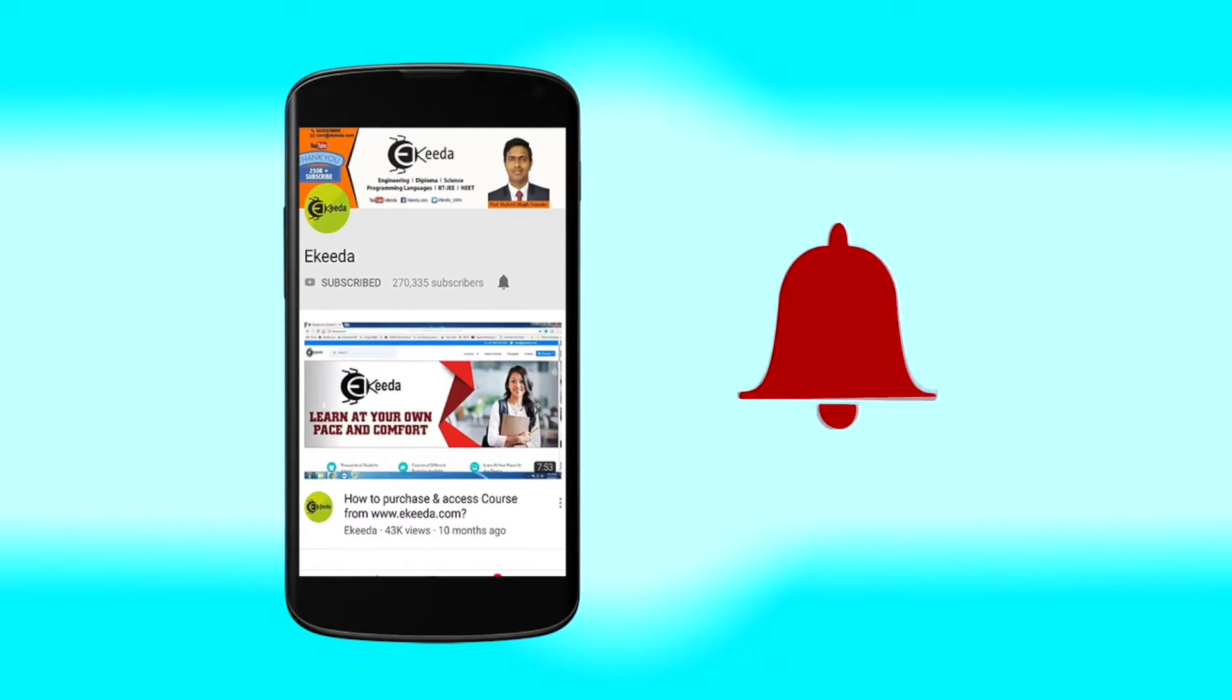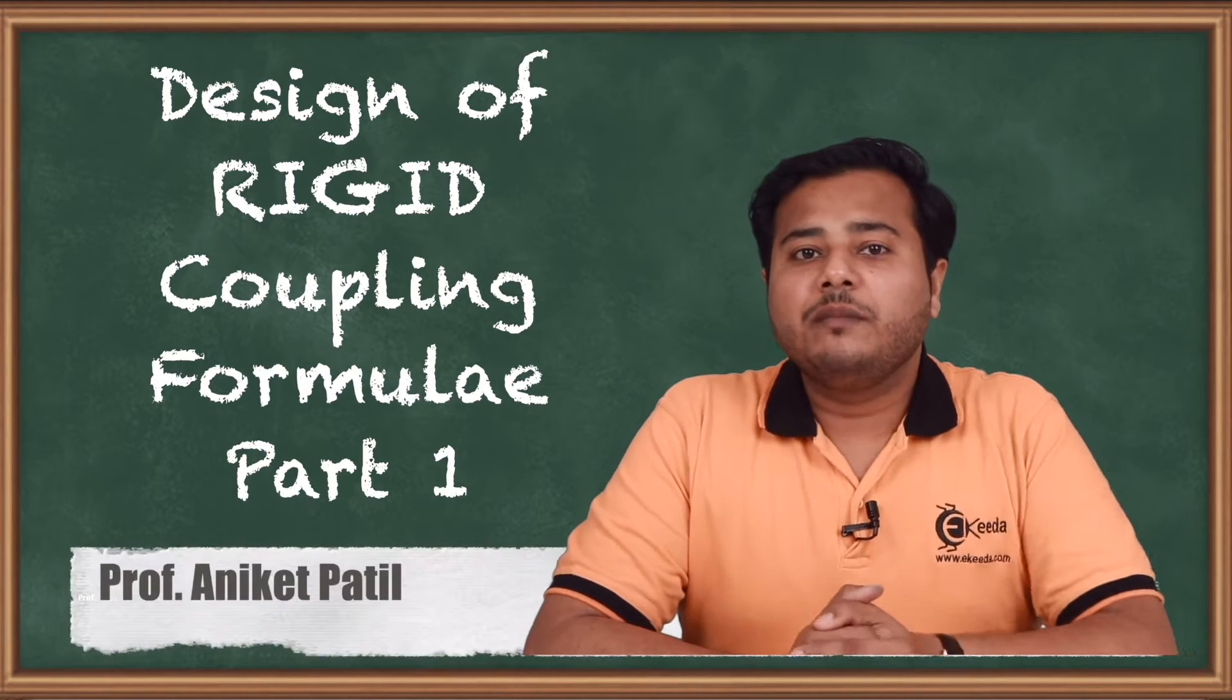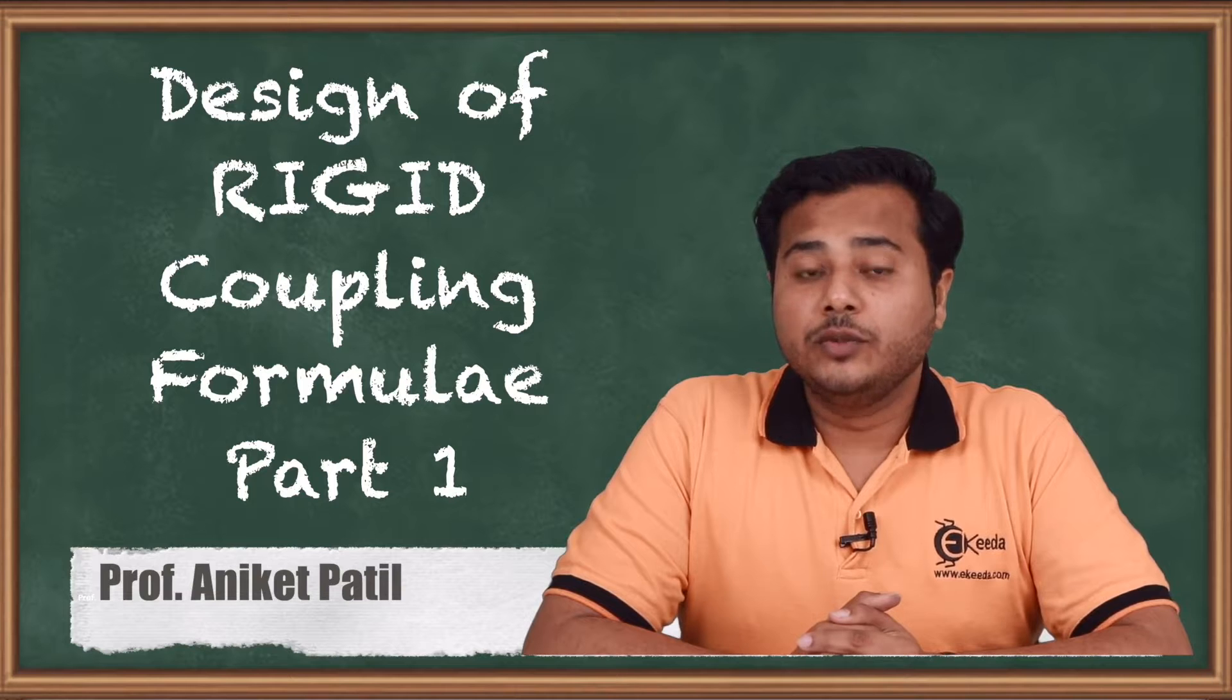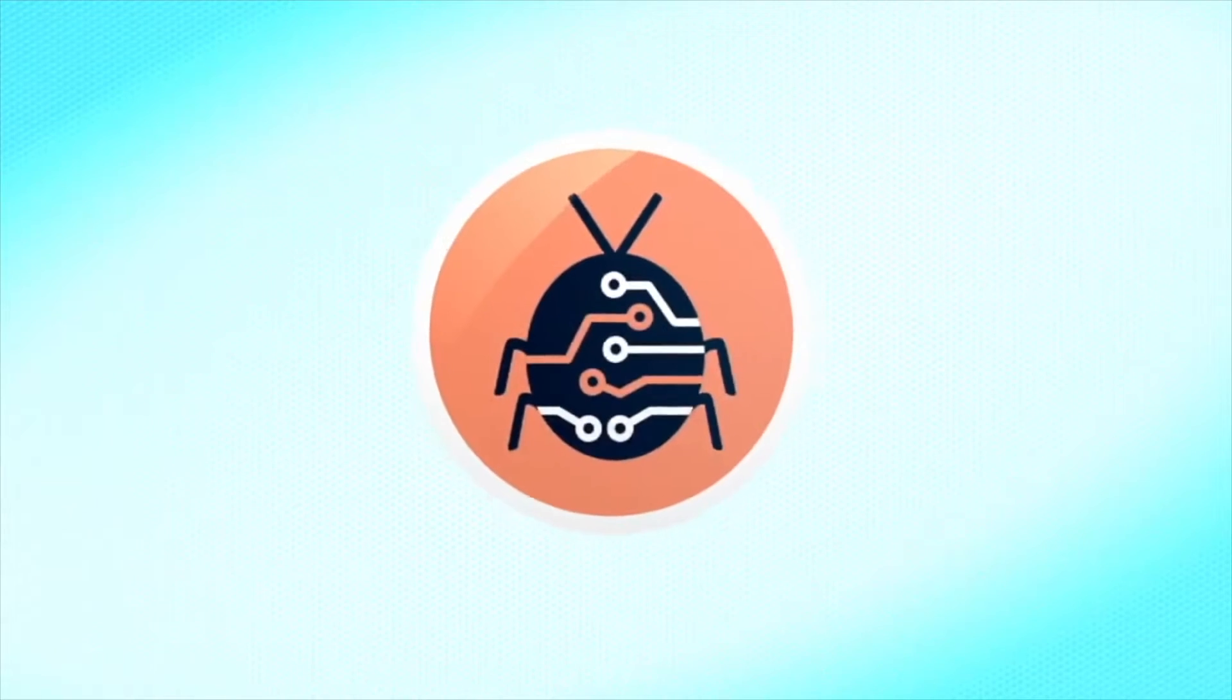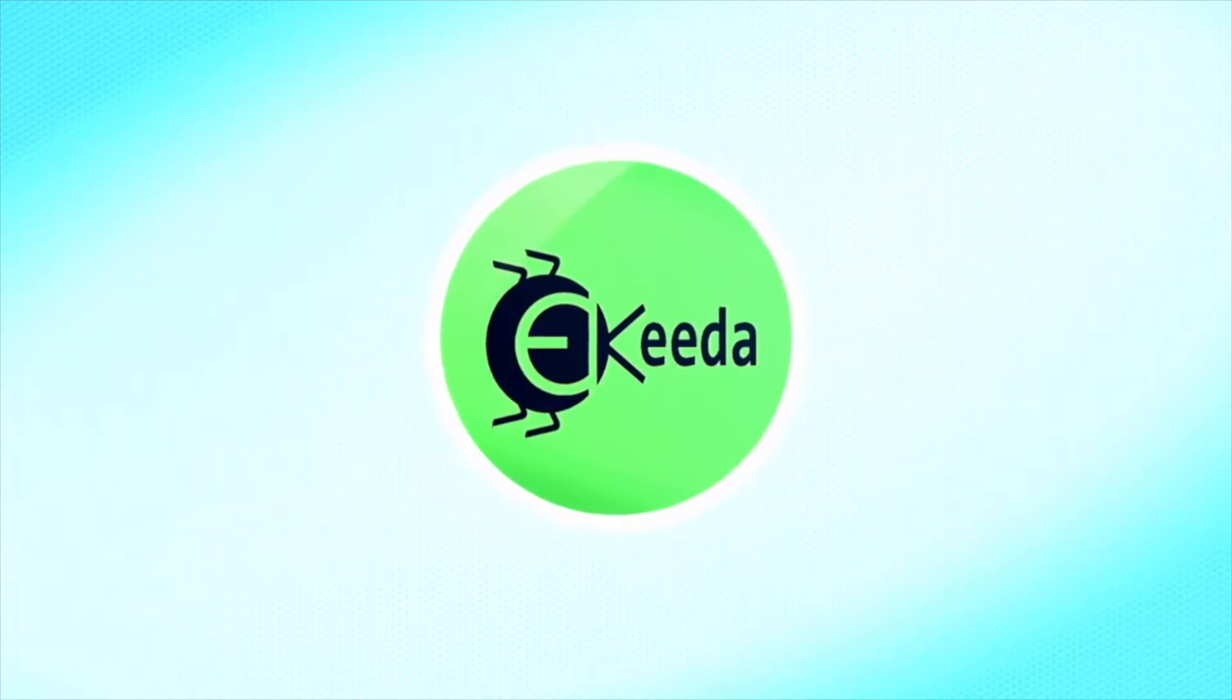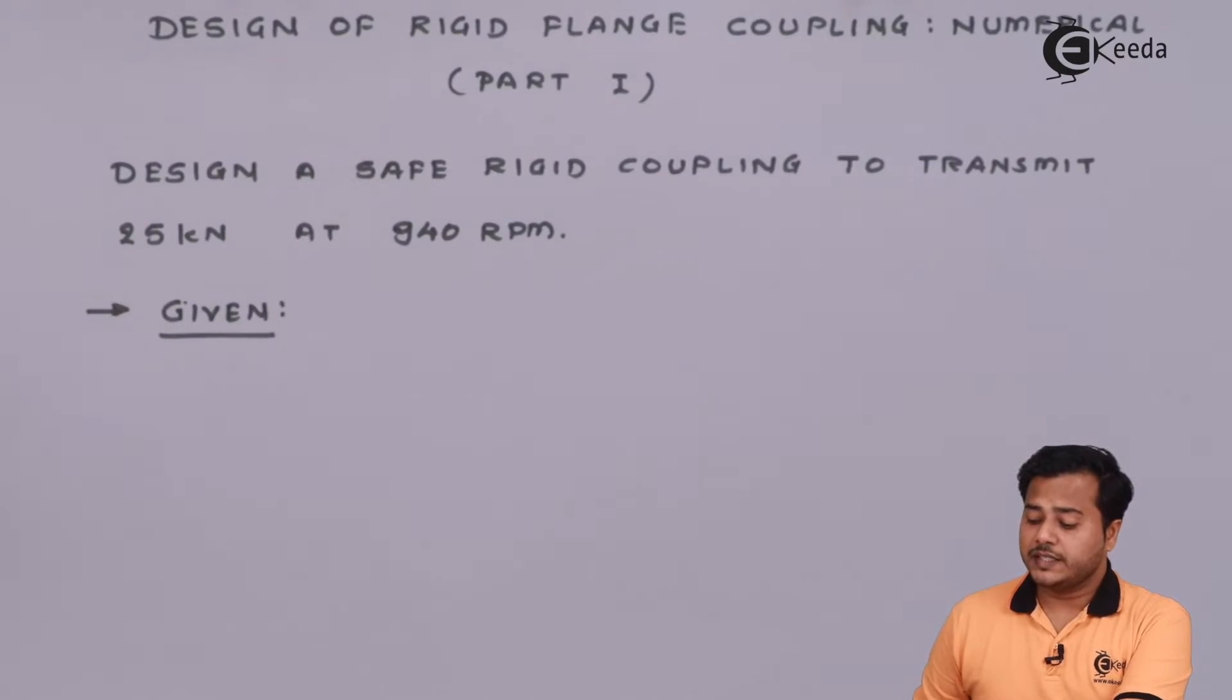Click the bell icon to get latest videos from Ikeda. Hello friends, welcome back to a subject of machine design 1. We are learning about the design procedure and numerical for flange coupling, also called rigid coupling. Let us quickly look at the problem statement. As you can see, it says design a safe rigid coupling to transmit 25 kN at 940 rpm. This is the only data given.